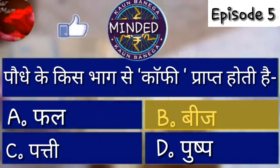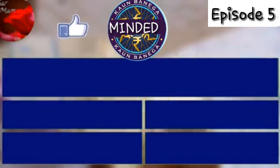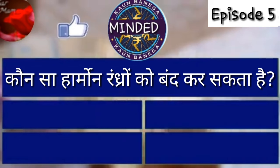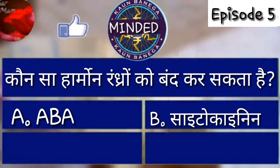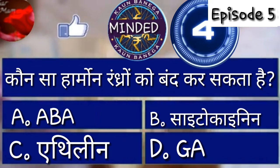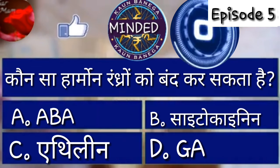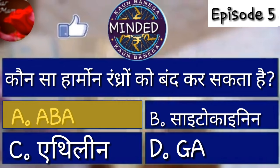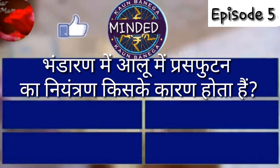Enjoy कर रहे होंगे question solve करके, comment box में जरूर लिखिए। Next question: कौन सा हार्मोन रंध्रों को बंद कर सकता है? Option A - ABA, Option B - cytokinin, Option C - ethylene, Option D - GA। समय समाप्त। Correct option है Option A - ABA, जिसकी full form है Abscisic acid। यह acid रंध्रों को बंद करने का काम करता है।